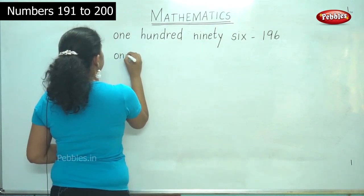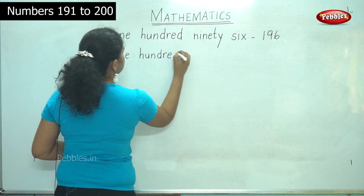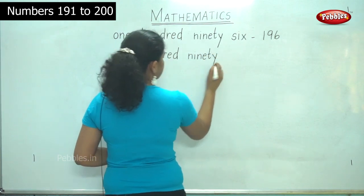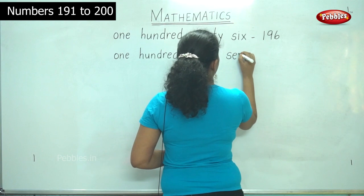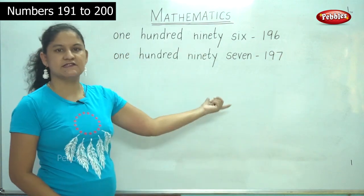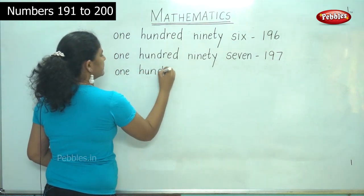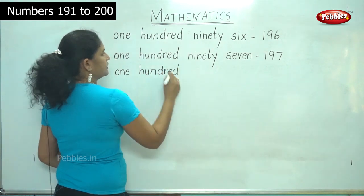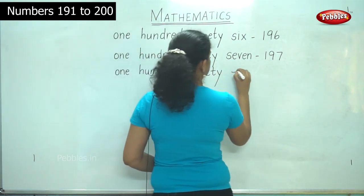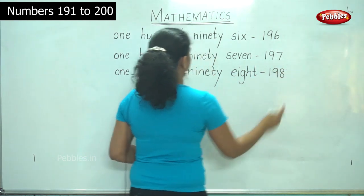197: O-N-E H-U-N-D-R-E-D N-I-N-E-T-Y S-E-V-E-N. 1-9-7, 197. 198: O-N-E H-U-N-D-R-E-D N-I-N-E-T-Y E-I-G-H-T. 1-9-8, 198.